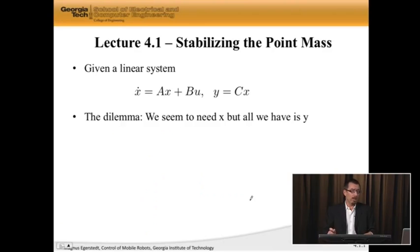In the first lecture we're going to stabilize the point mass. In general, if I have a linear system, x dot equals Ax plus Bu, y equals Cx, the dilemma is that we seem to need x for stability, but all we really have is y.